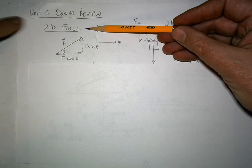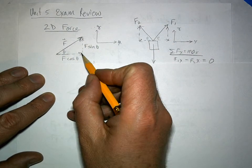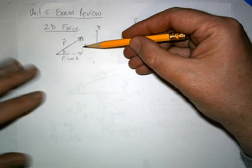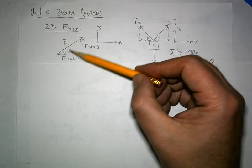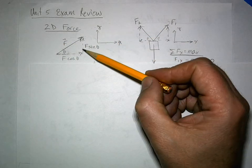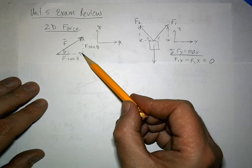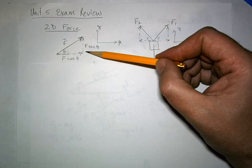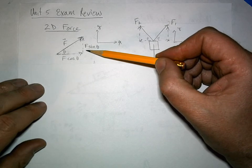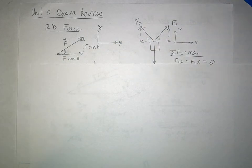2D force means we have a force that can be broken up into its x and y components. First you identify what the x and y directions are, then with some angle within that axis system you make the adjacent component F cosine theta and the opposite component F sine theta. Often F sine theta is in the y direction and F cosine theta is in the x direction, but on incline plane problems those get reversed.